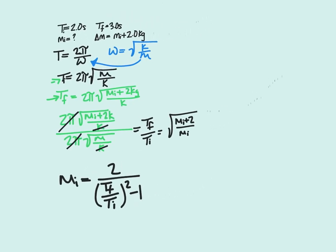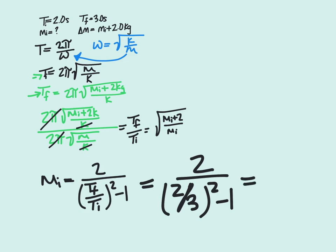And when we substitute in our 2 periods, so we know that T_i is 2 seconds, so we would get 2 divided by 3 seconds divided by 2 seconds squared minus 1. And that will give us an answer of 1.6 kilograms. So our initial mass before 2 kilograms was added was 1.6 kilograms.